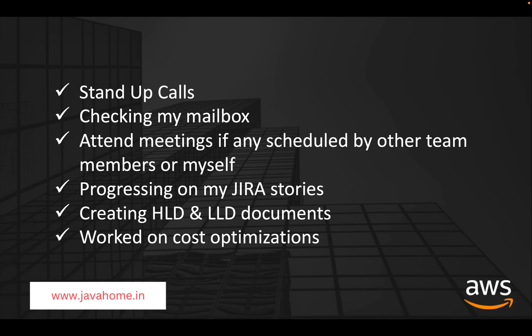I also worked on activities like cost optimization in my AWS account. My manager asked me to look at the cost and try to optimize it — for example, choosing reserved instances or spot instances in place of on-demand instances to reduce cost. We can also optimize S3 costs by moving data from standard storage to Glacier or Glacier Deep Archive. Even CloudWatch logs can be optimized, as CloudWatch charges a lot for data ingestion.